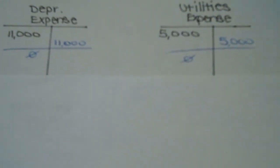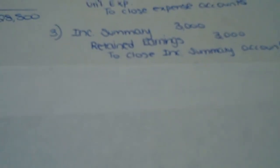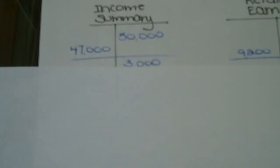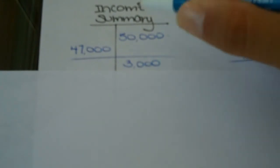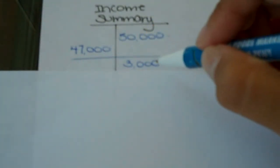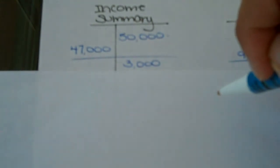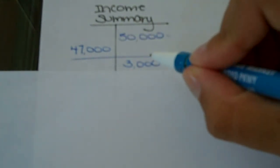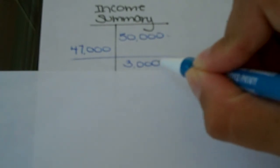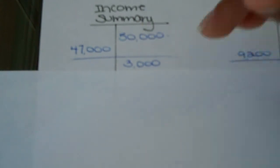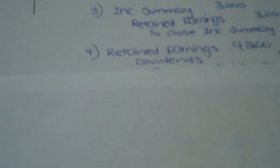Let's move on to our next temporary account. I'm going to do income summary next, since we already know the balance. We posted the $50,000 of revenue and the total expense account amount of $47,000, leaving a remaining balance in income summary of $3,000. We need to get this account to zero. Since it has a credit balance right now of $3,000, we're going to have to debit the account for $3,000. Let's look at that journal entry.